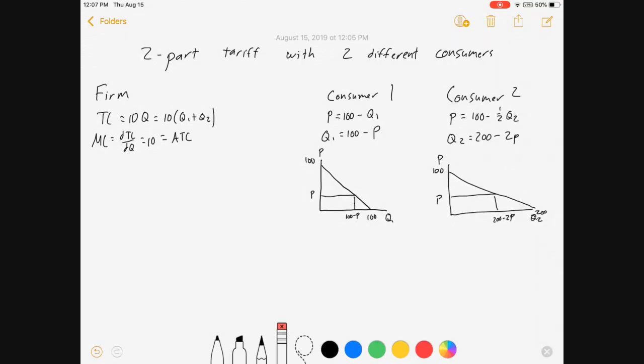The profit for the firm is equal to the quantity it sells, Q1 plus Q2, times its profit per unit, assuming it charges the same per-unit price to both consumers, plus the fee charged to consumer 1 plus the fee charged to consumer 2.